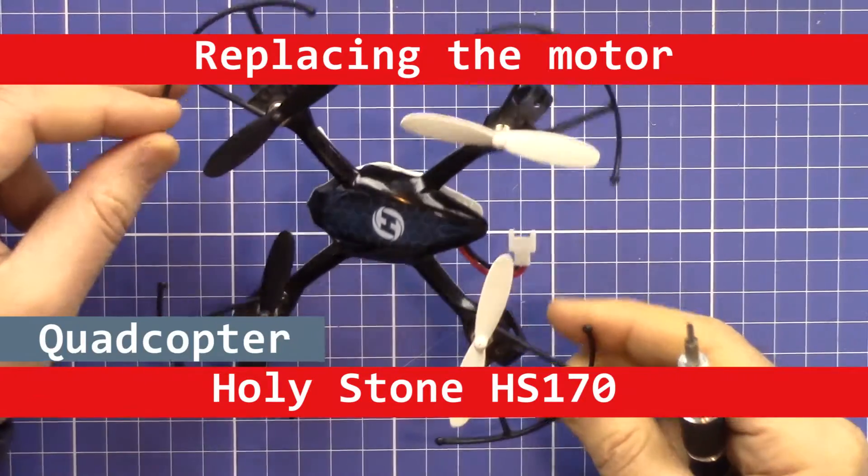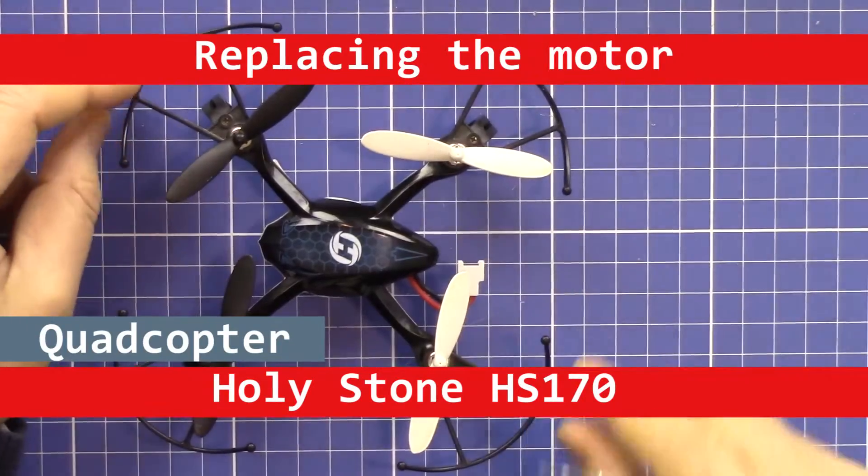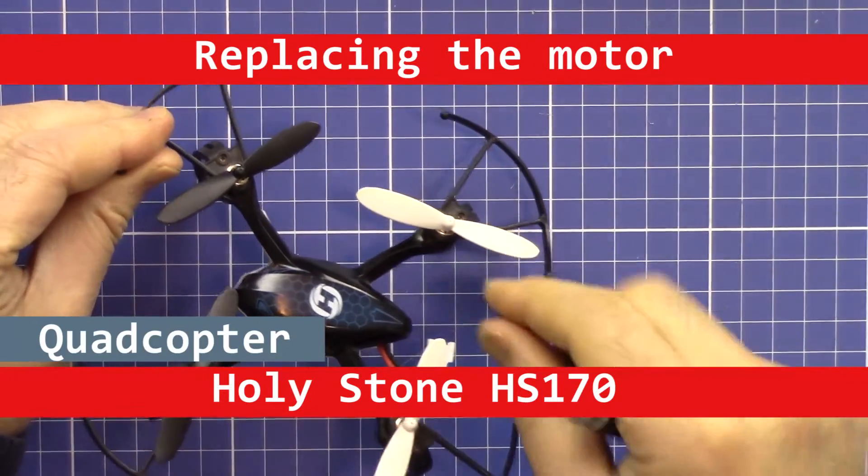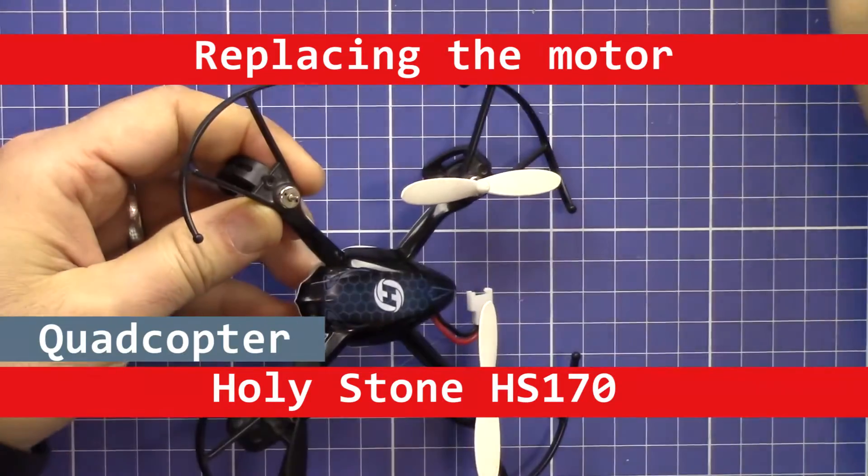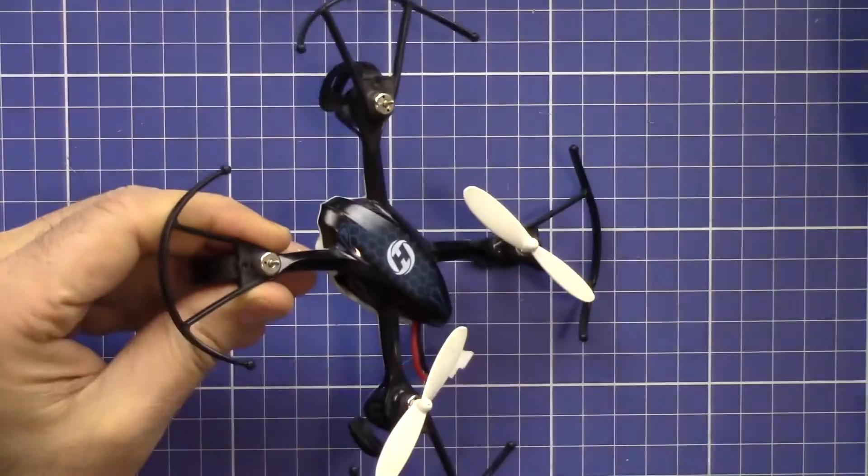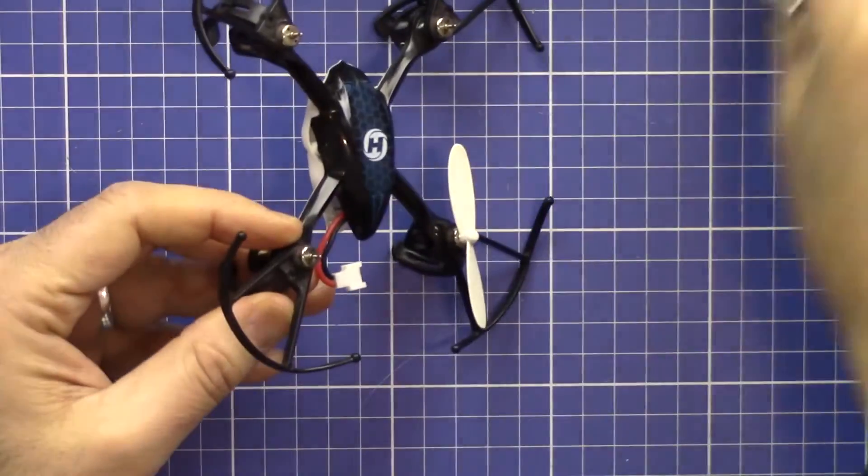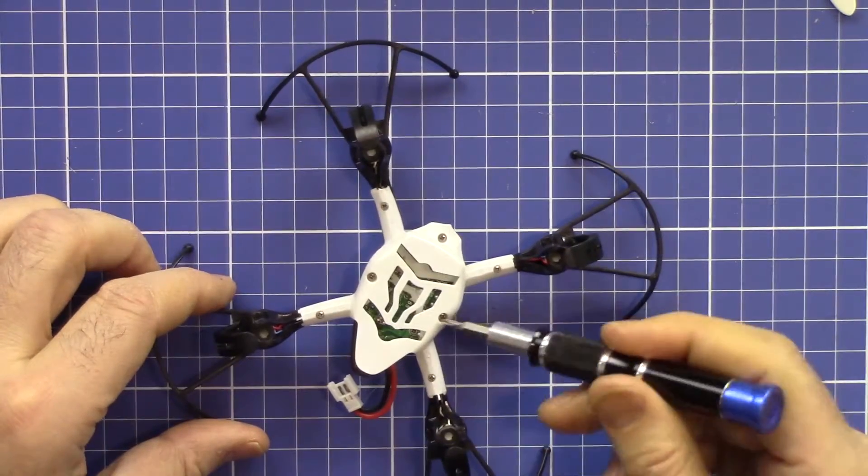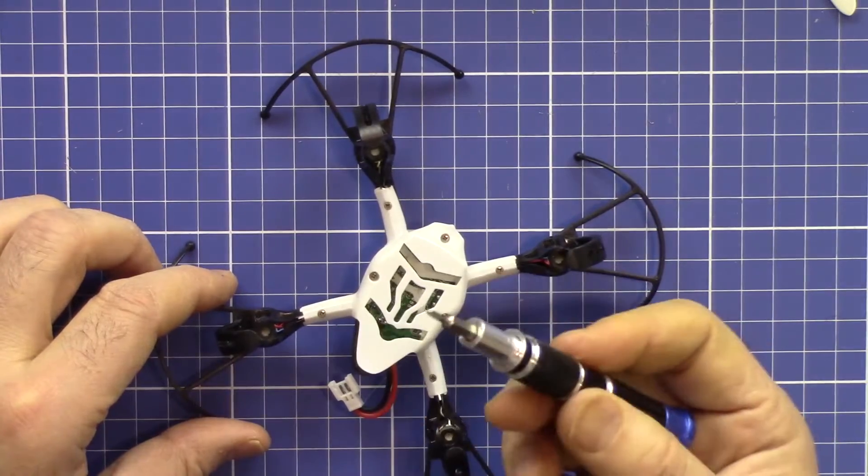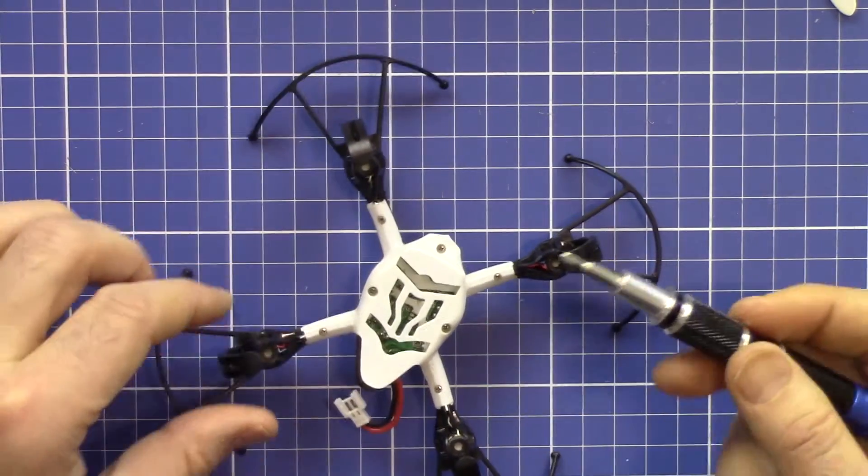Okay, so this is the drone that has an issue with the motor. Now let's start opening it. First, let's remove the props. Then we have these screws here and we need a Phillips screwdriver.